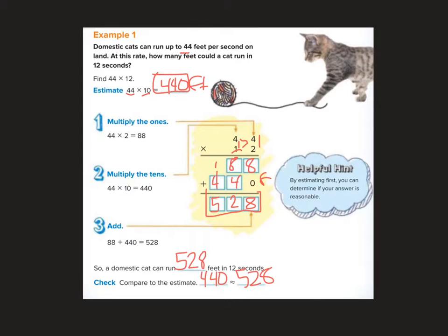I mean, I know it tells us we're in the right ballpark, because if I would have forgotten my zero here, this is the biggest thing it will catch. If I forget to put my zero there, then I would be adding 88 plus 44.